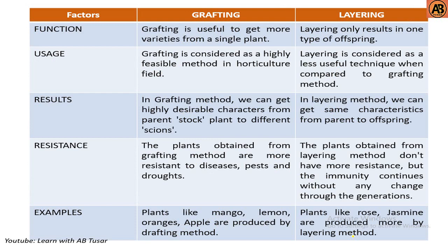Here are some differences between grafting and layering. On the basis of function, grafting is useful to get more varieties from a single plant, while layering only results in one type of offspring. Grafting is considered a highly feasible method in the horticulture field, whereas layering is considered a less useful technique. In grafting, we can get highly desirable characters from parent stock to different scions, while in layering we get the same characteristics from parent to offspring.